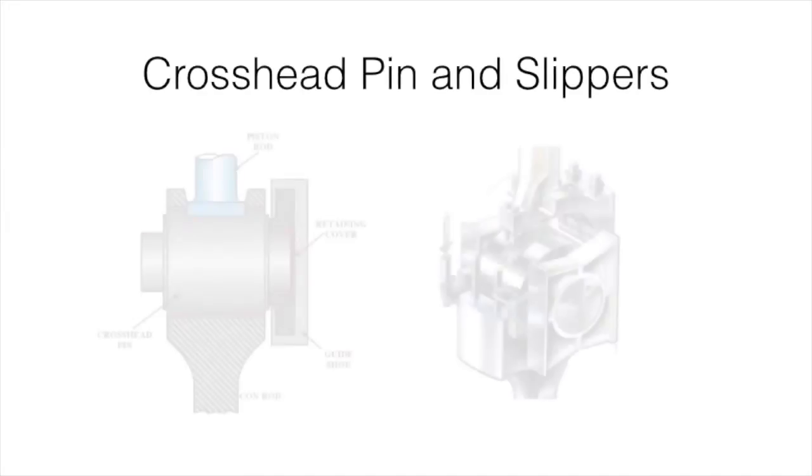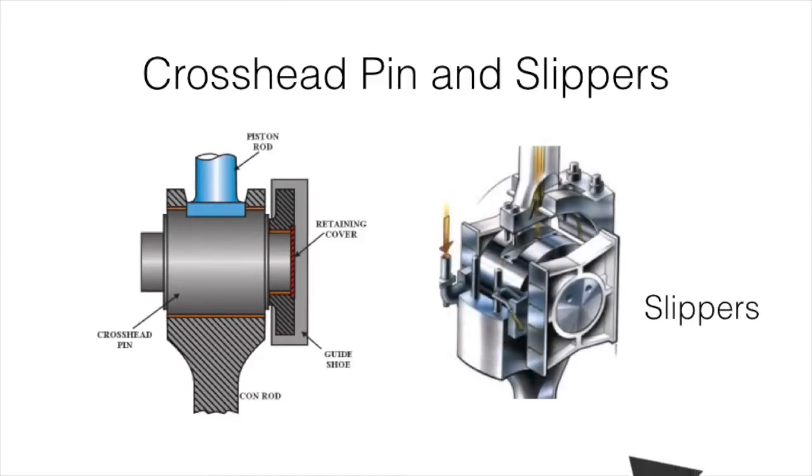On either side of the crosshead pin is where the crosshead slippers are located. The slippers run up and down the crosshead guides as the piston and rod are moving back and forth, and they prevent the top of the connecting rod from moving sideways.